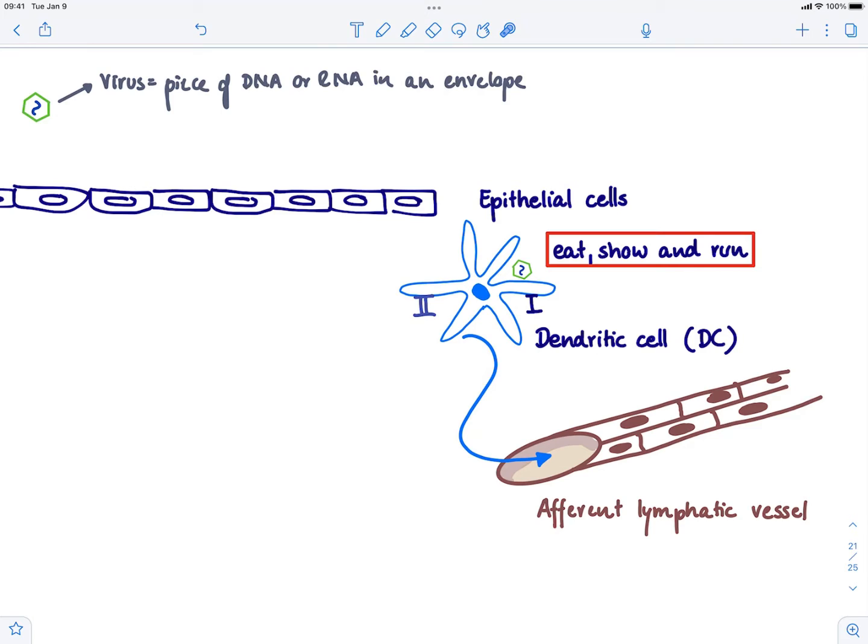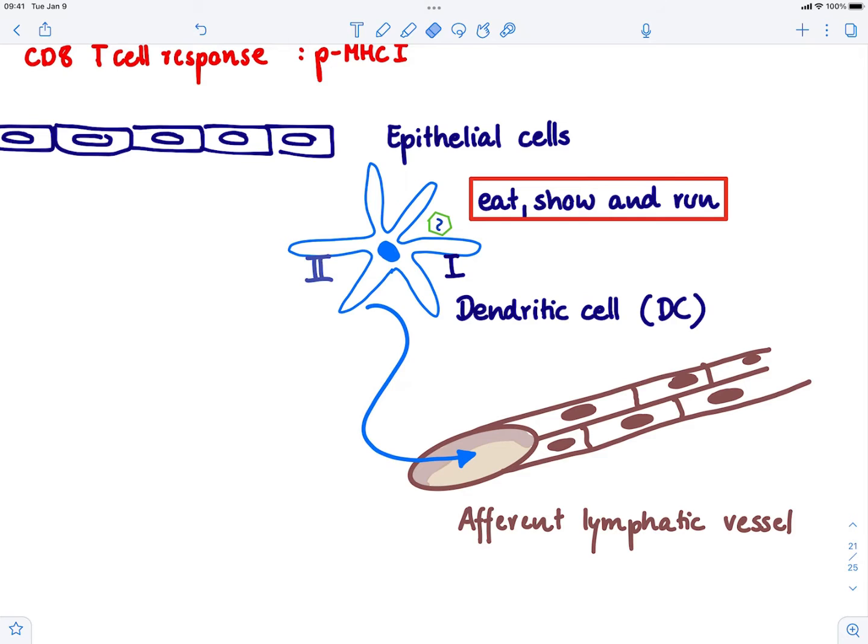We definitely want to have a CD8 T cell response if you are infected with a virus. And why? Because if a cell is infected with a virus, the only way you can help the cell is basically to kill it. Help is not possible anymore once a cell is infected with a virus. So we want to kill it. So we want to get a CD8 T cell response.